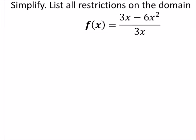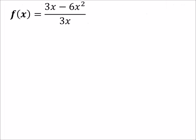So we'll try this one the same way we did that last one. We'll simplify first and then we'll see what restrictions are on the domain. So let's look at factoring that numerator first.